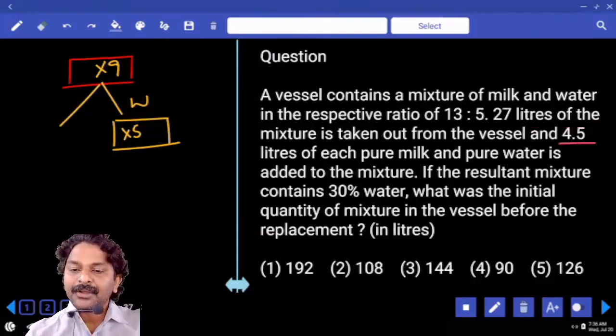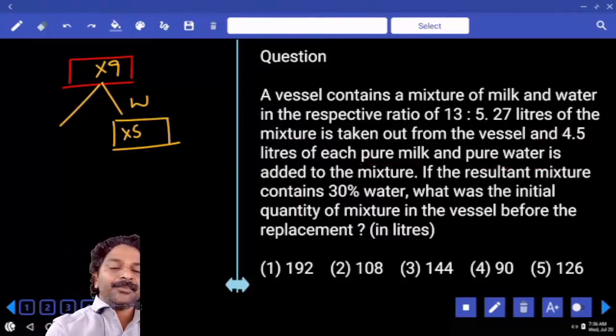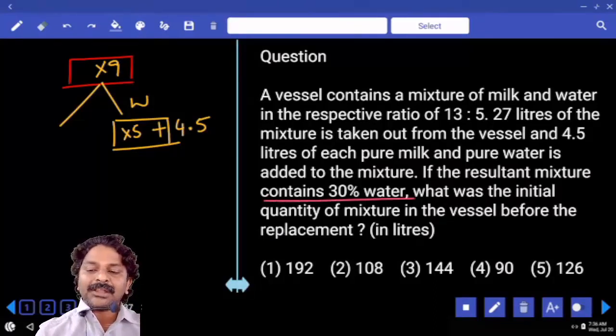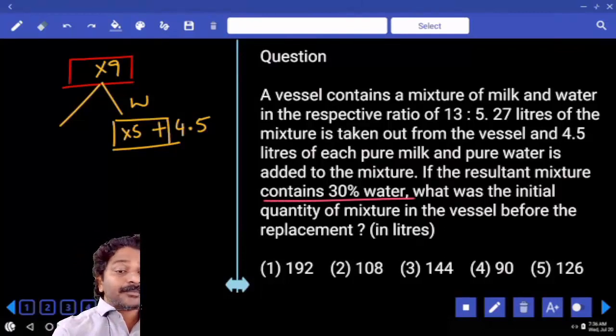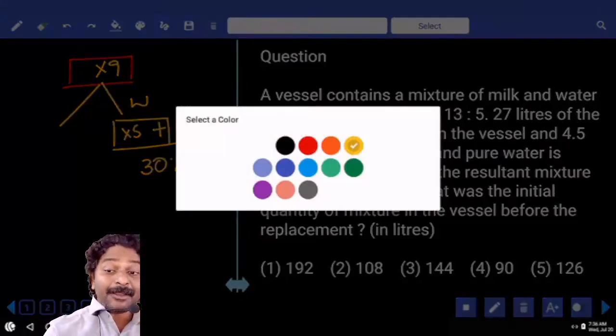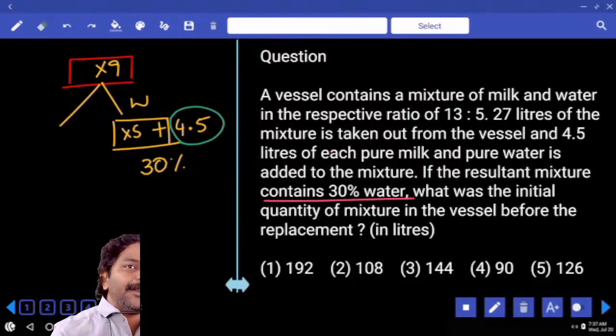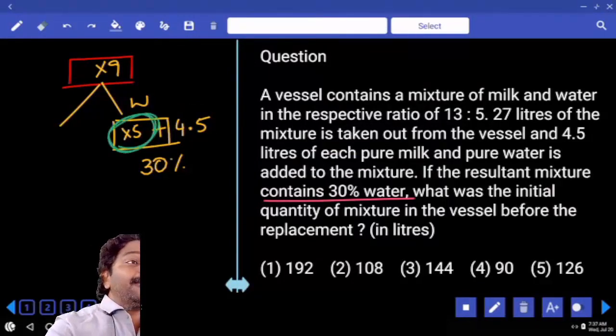Then what happened? 4.5 liters of milk and water both added. So to this water again we are adding 4.5 liters. Then in final container water is what percentage they said? 30 percentage should be a multiple of... Already we have 4.5, is it a 3 multiple? Then this number also must be a multiple of 3.